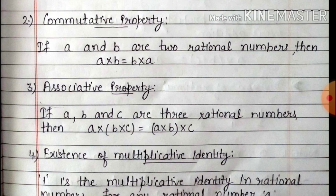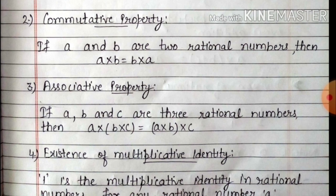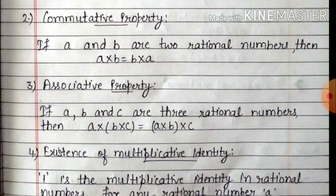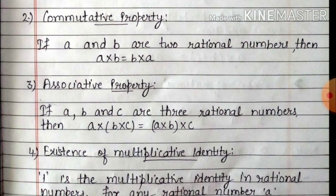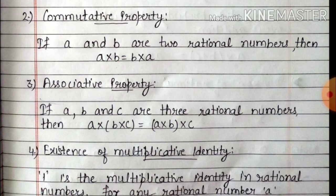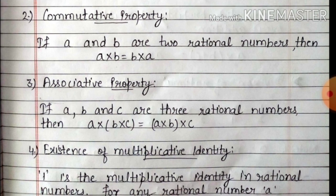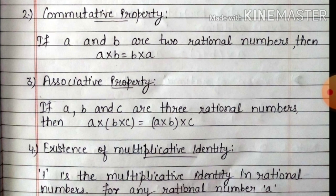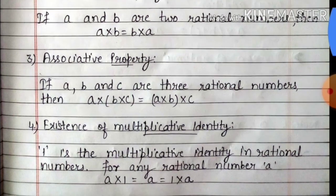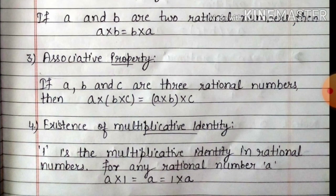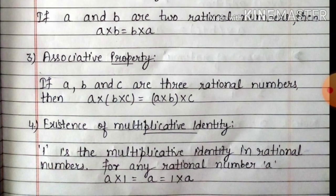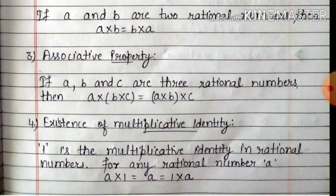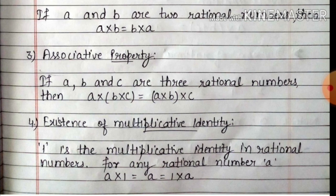Now fourth is existence of multiplicative identity. अब multiplicative identity क्या है? One. One is the multiplicative identity in rational numbers. For any rational number A, A multiply 1 equals to A equals to 1 multiply A. यानि कि अगर हम rational number 2 by 3 लें और उसे 1 से multiply करें, तब भी answer 2 by 3 ही आएगा. यानि कि 1 क्या बनती है? Multiplicative identity.